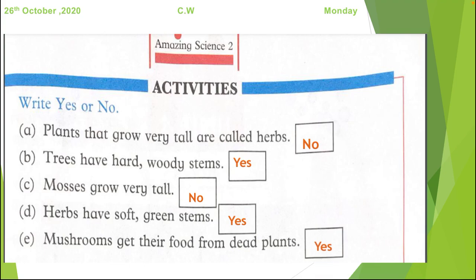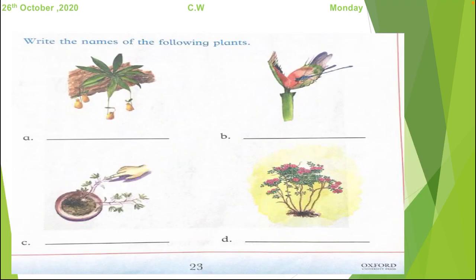Mushrooms get their food from dead plants. The last statement is mushrooms get their food from dead plants. Yes. Because mushrooms are not green. They cannot make their own food. So they take the food from dead plants. So this statement is correct.